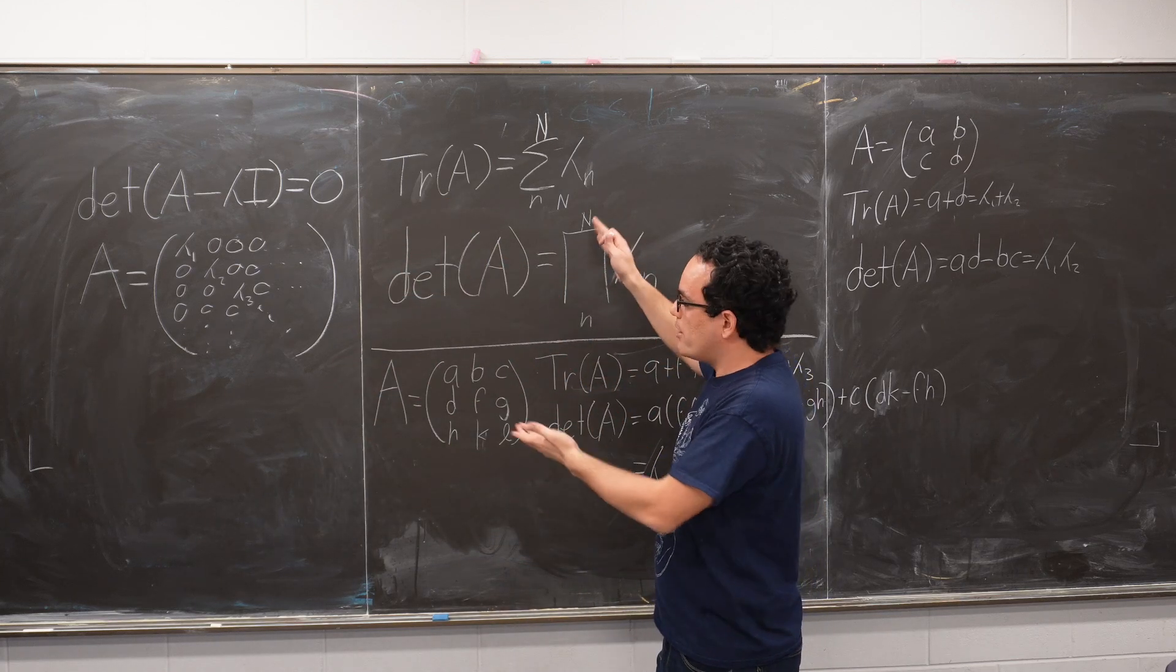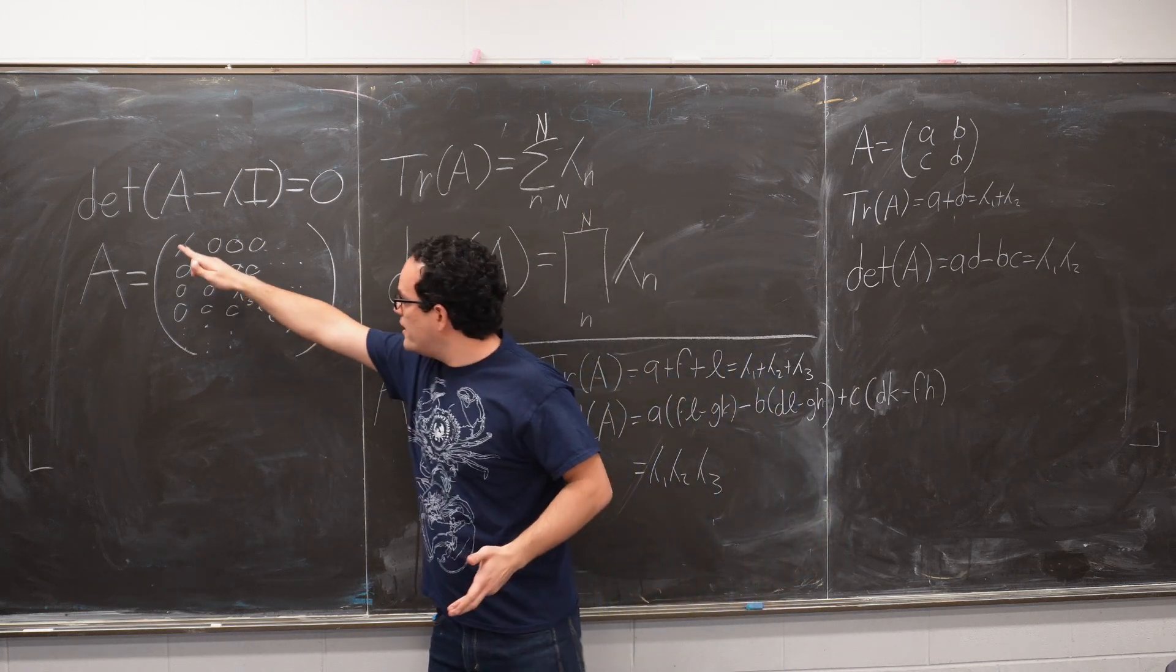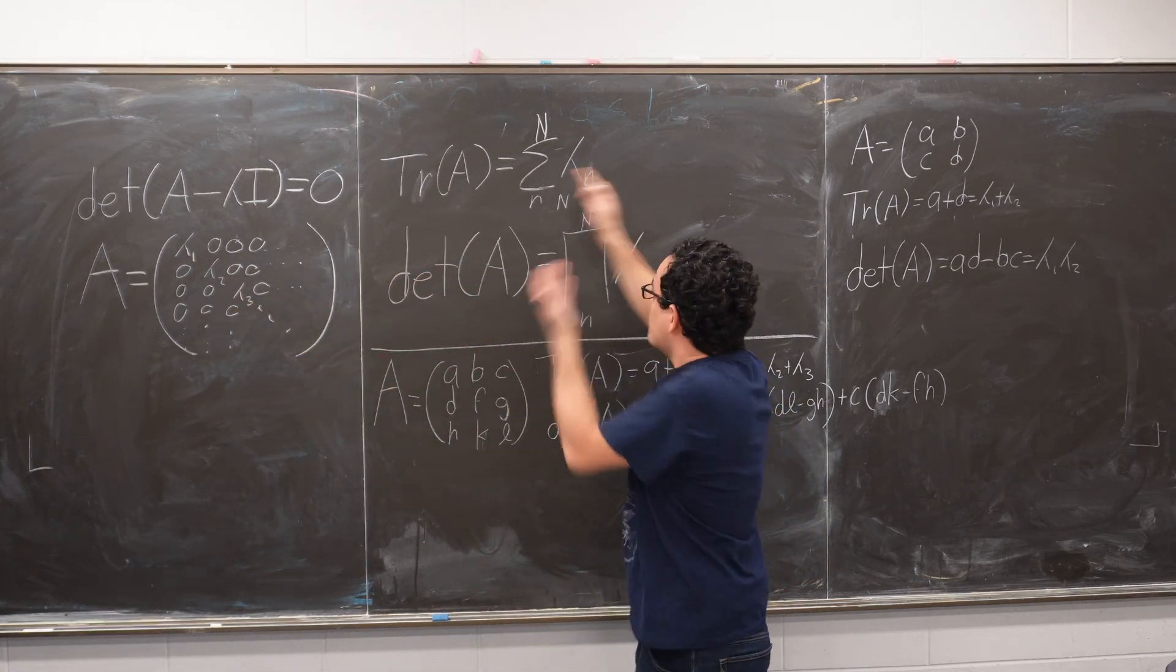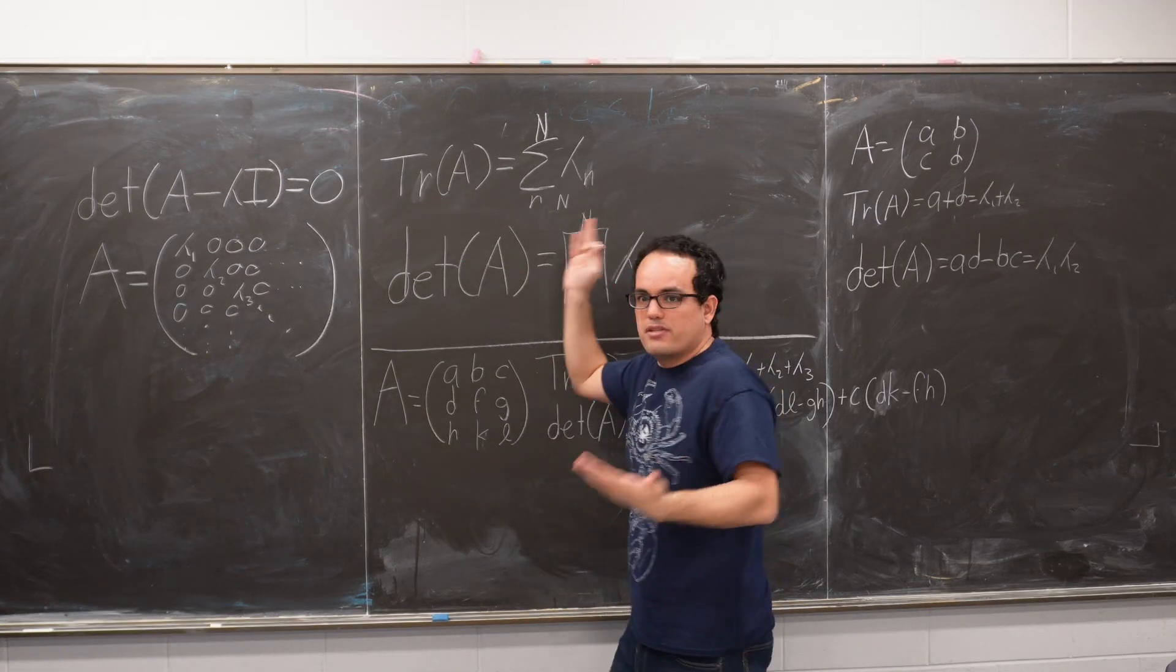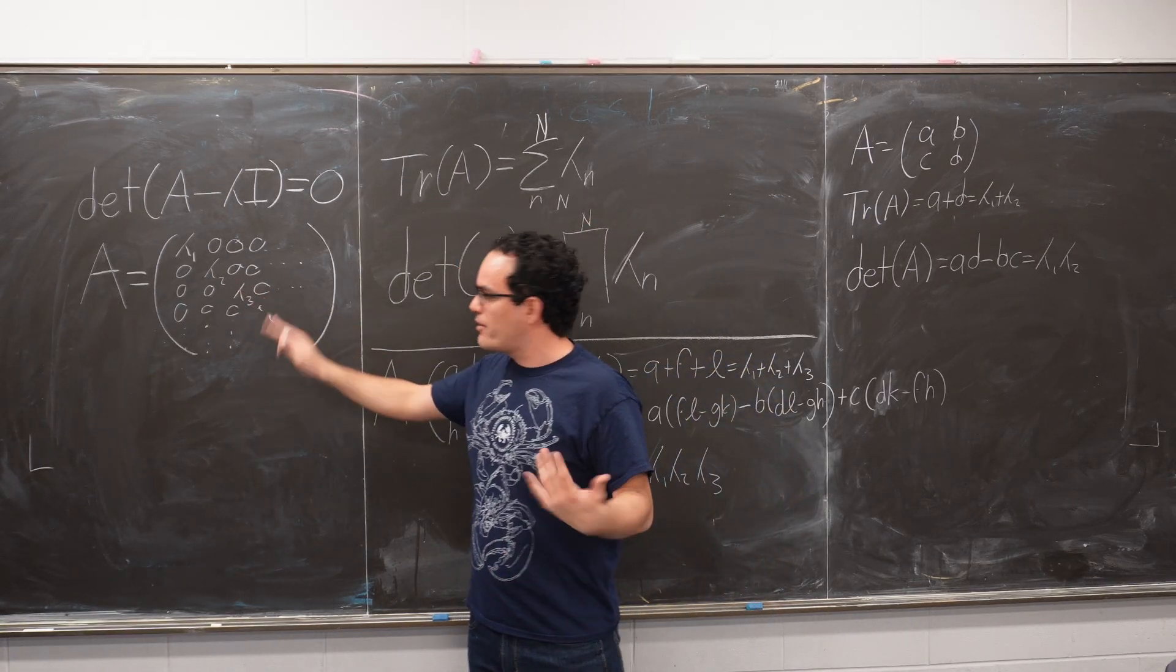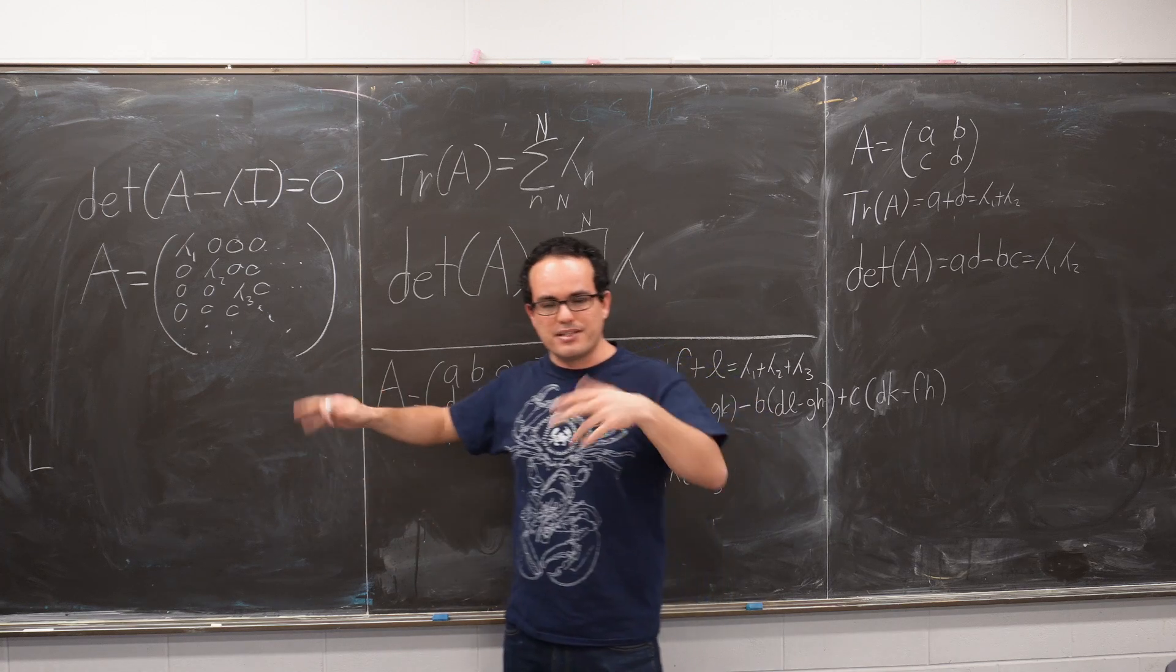So the trace of a diagonal matrix is just the sum of all the elements in the diagonal. That's it. That means the sum of all the eigenvalues. And in fact, the trace is always the sum of all the elements in the diagonal, regardless of whether the matrix is diagonal or not.